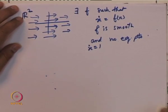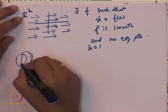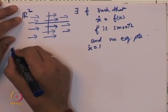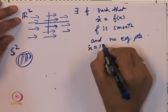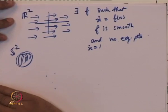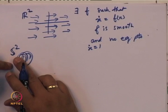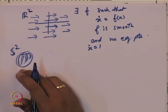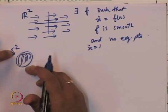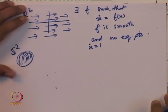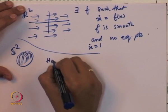On the other hand, the answer is no if you want f to be smooth and x evolves on a sphere. On S2, one cannot have a continuous vector field with no equilibrium points — such a situation cannot happen for the sphere S2 unless f is discontinuous. This is a very important result called the Hairy Ball theorem.